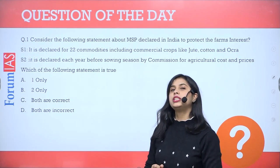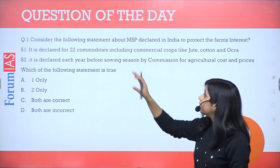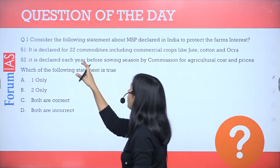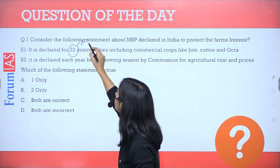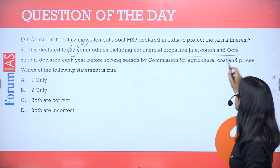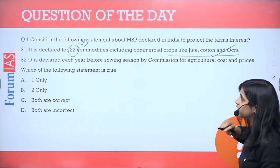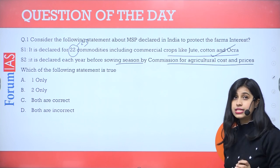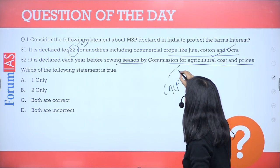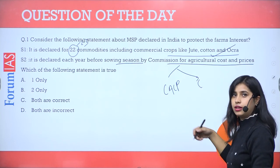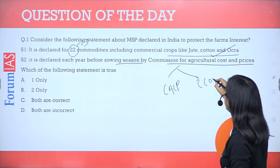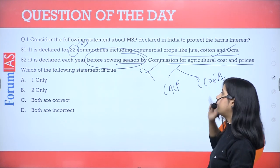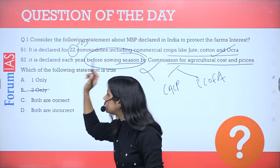Coming back to the question we started with: consider the following statements about MSP declared in India to protect the farmers' interest. Statement one: it is declared for 23 commodities including commercial crops like jute, cotton, and okra — that statement is correct. Statement two: it is declared each year before the sowing season by the Commission for Agriculture Cost and Prices. As discussed, it is calculated by CACP but declared by the Cabinet Committee on Economic Affairs. So statement two is wrong — though the part about the sowing season is right. Only statement one is correct.